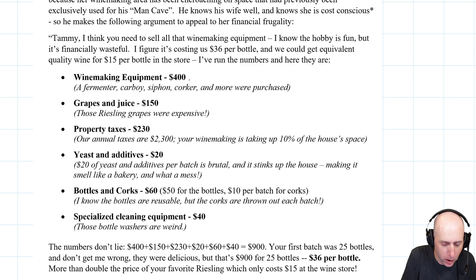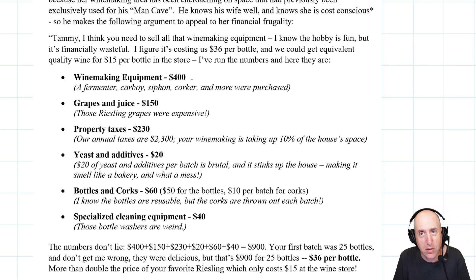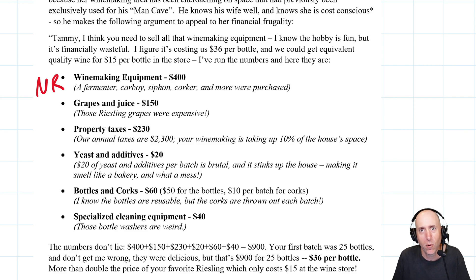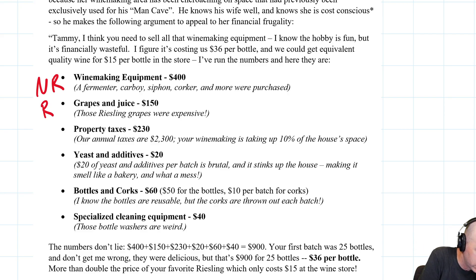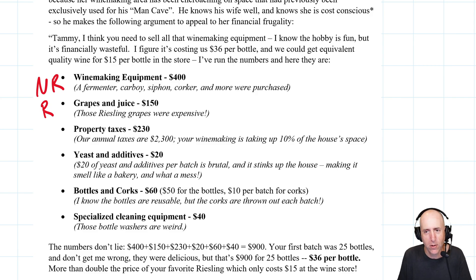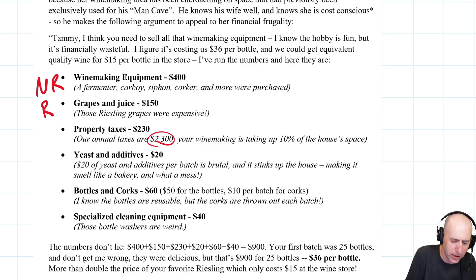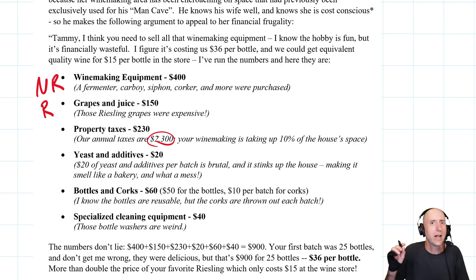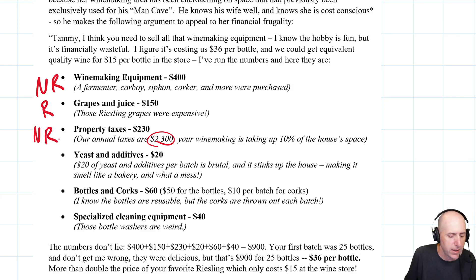Is the winemaking equipment cost relevant to whether she's going to make another batch of wine? The answer is no — she already owns the winemaking equipment. This is a sunk cost. Not relevant. Grapes and juice, $150 — yes, she's going to have to get more grapes if she wants to make more wine. If she's used up all her grapes and juice from the last batch, this will be relevant. Property taxes — well, whether she quits making wine or keeps making wine, they still have to pay $2,300 in property taxes. It's not a sunk cost, but it's not different between the options. Whether she makes wine or quits, the property tax bill stays the same. It's not a differential cost, so it's not relevant.